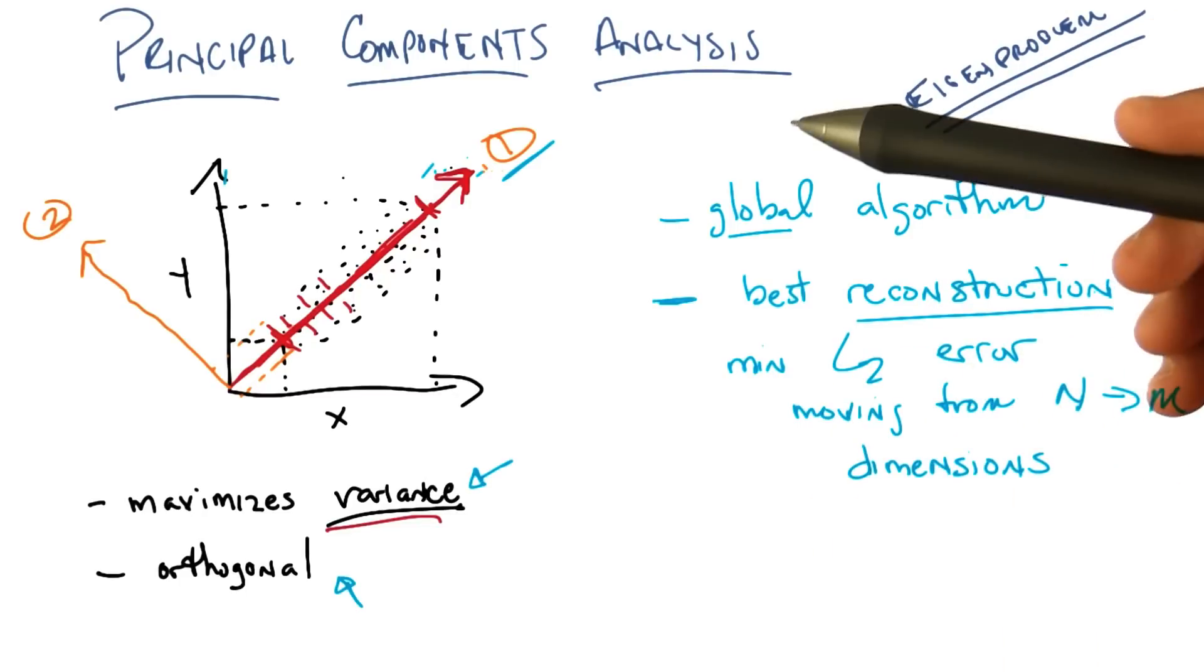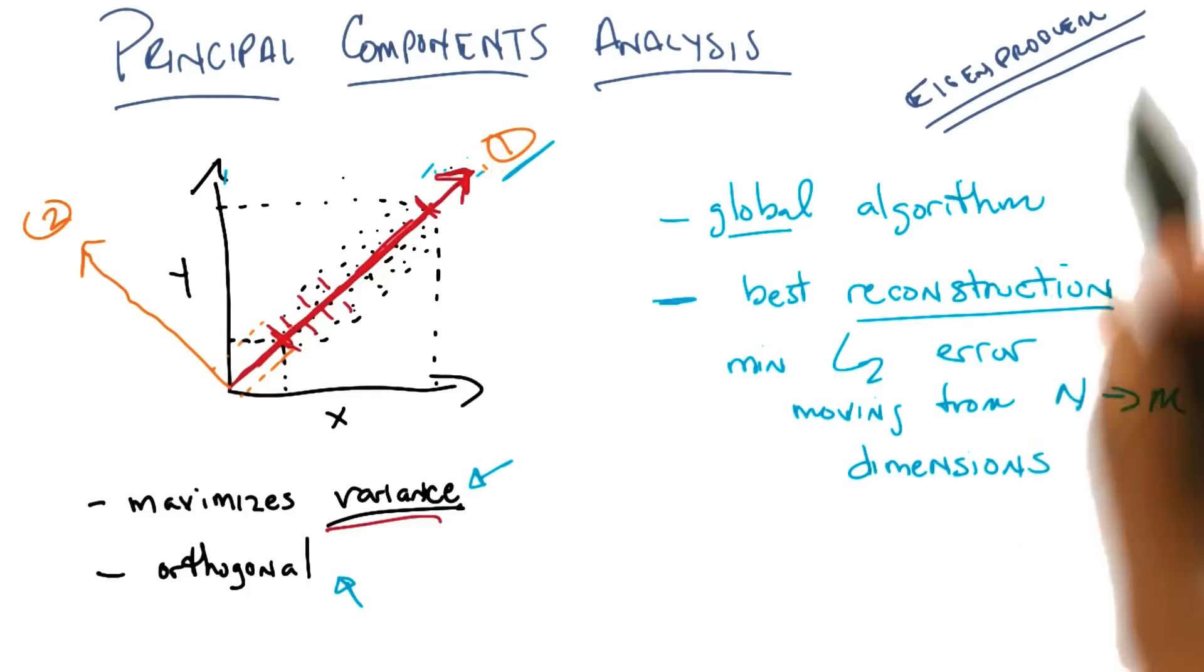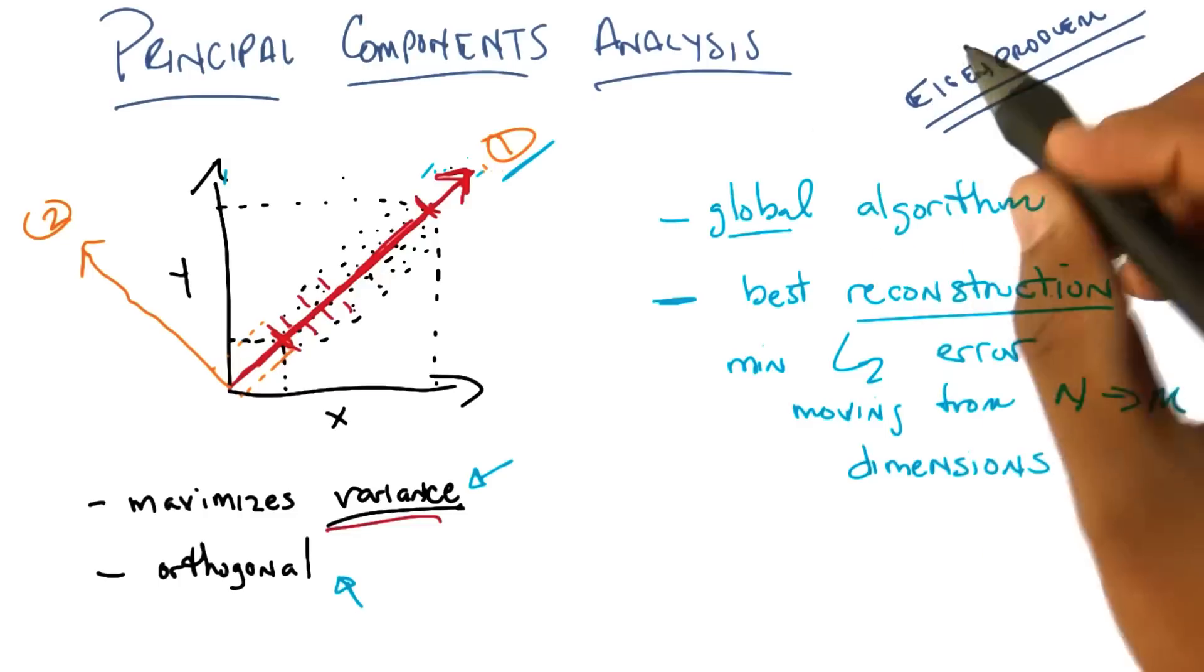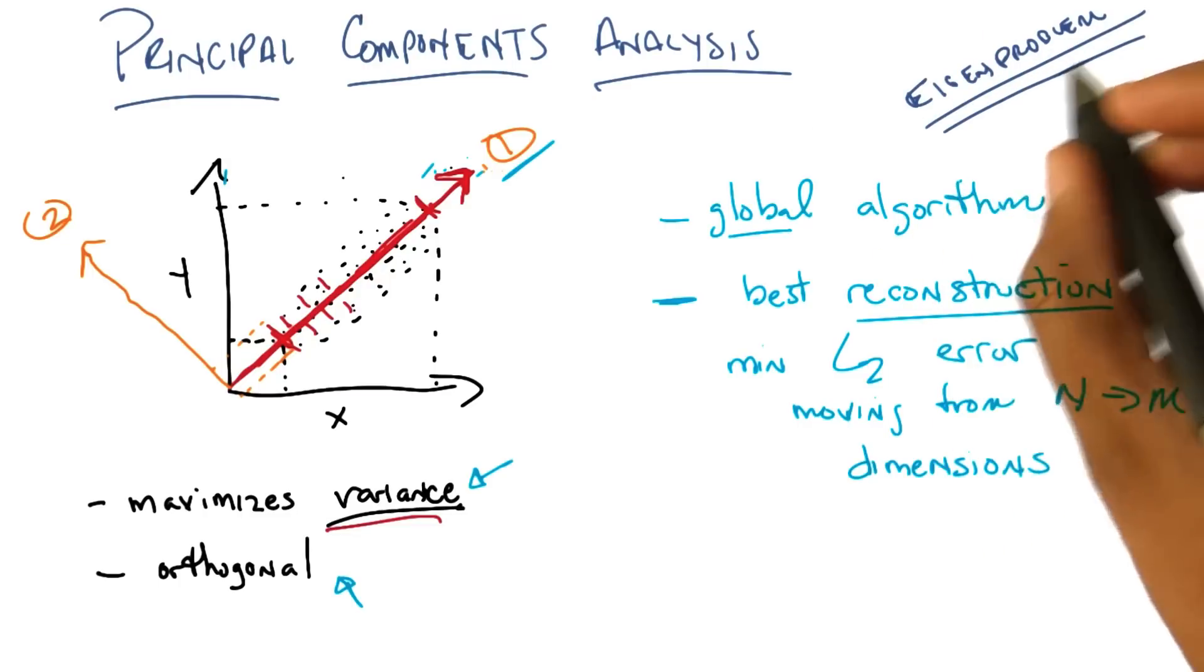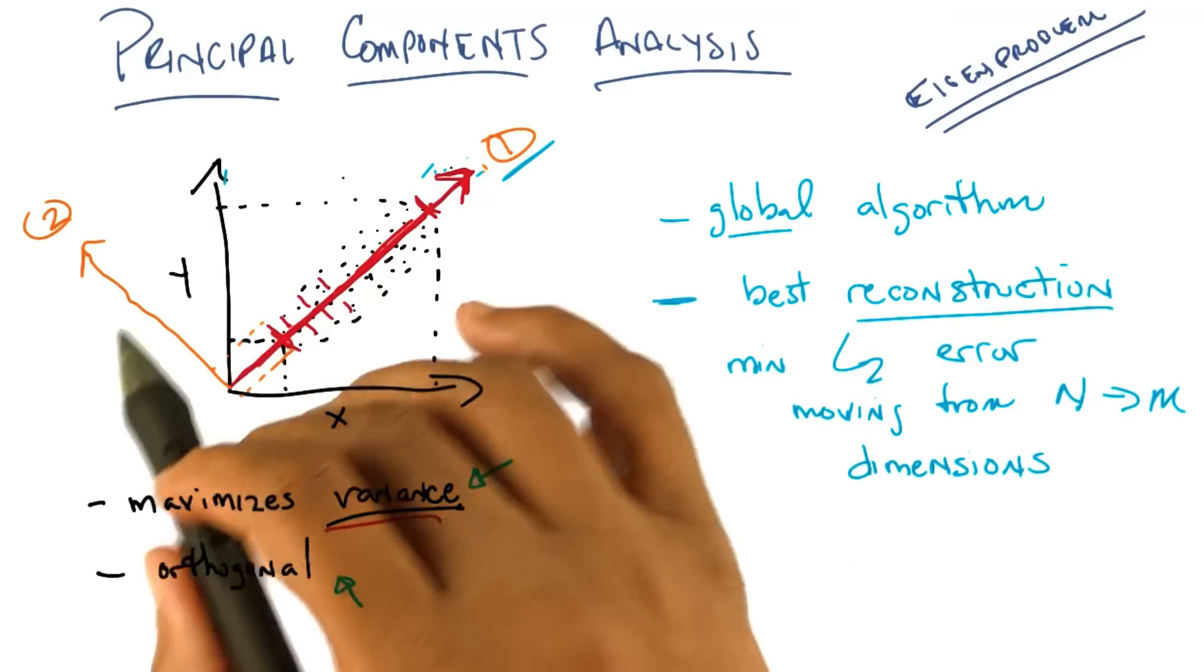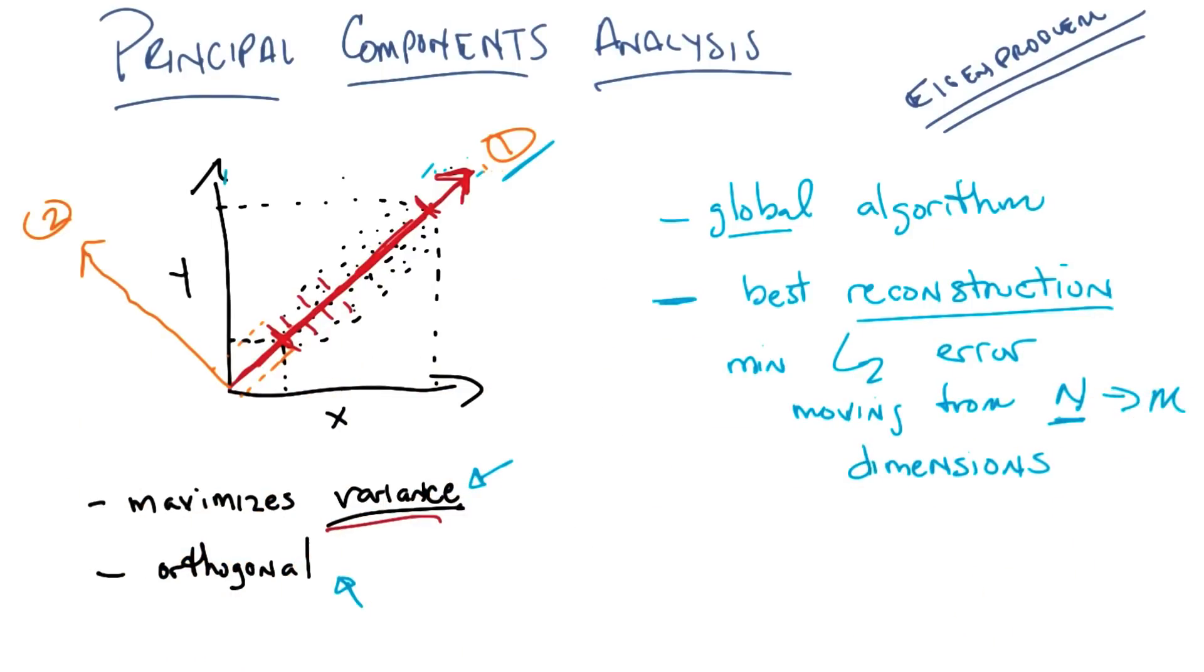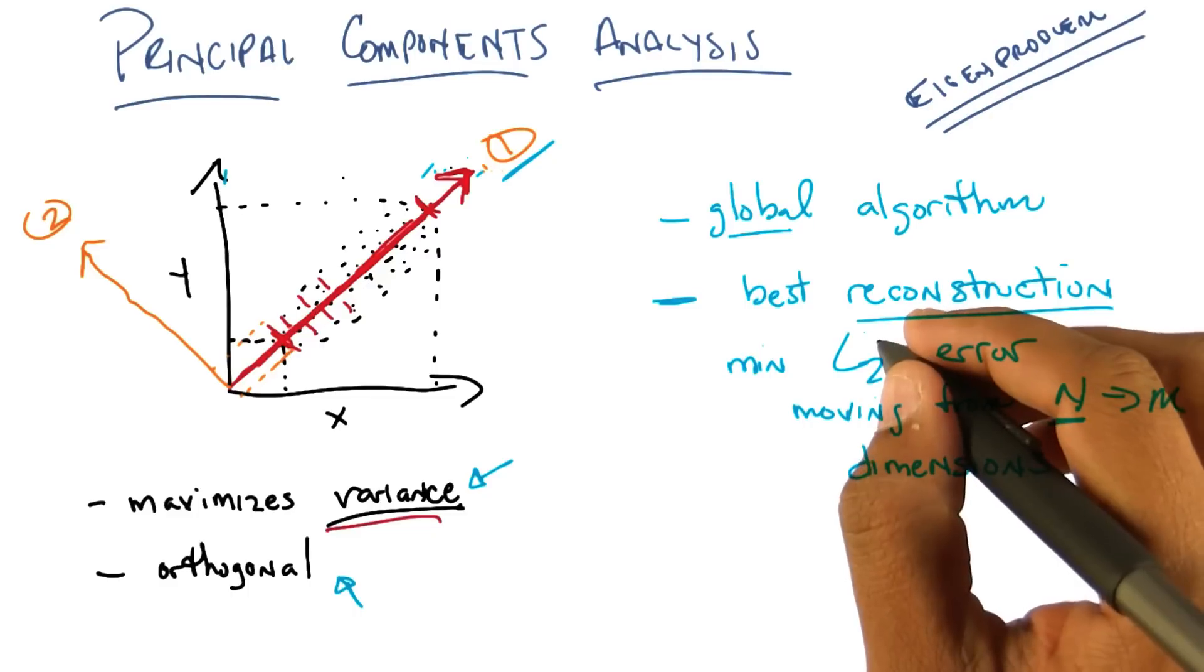Now, you might ask yourself, is there anything else nice about principal components analysis given this reconstruction error? And there's another property, PCA, that is very useful. And it boils down to the fact that it's an eigen problem. What happens when you do principal components analysis is you get all of these axes back. And in fact, if you start out with n dimensions, you get back n dimensions again.